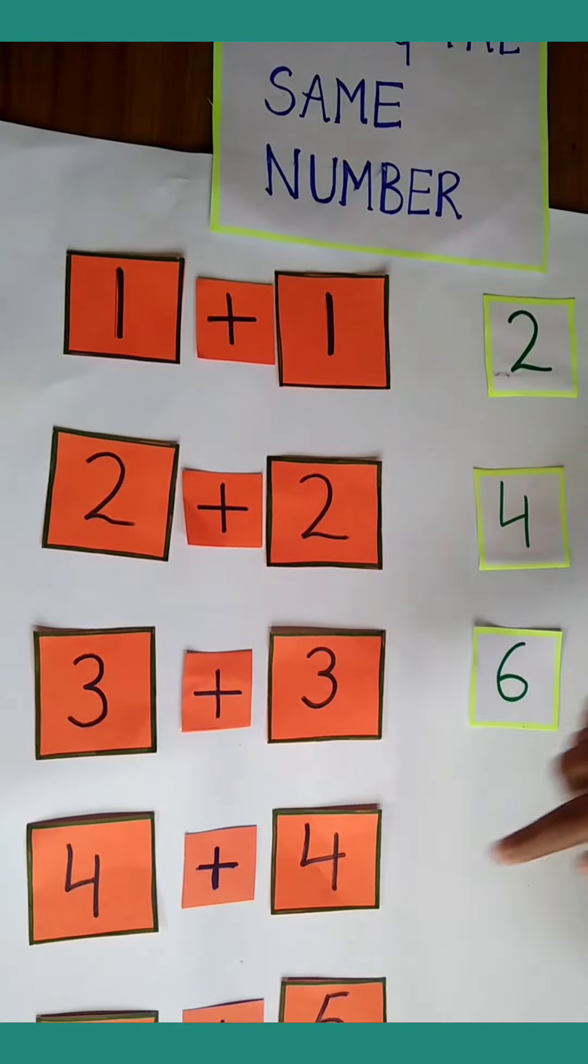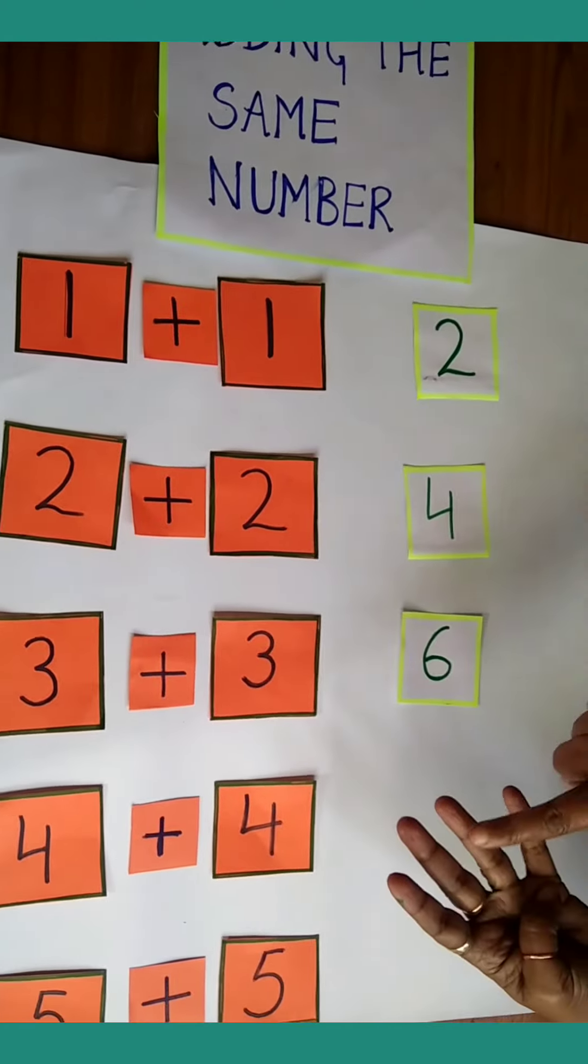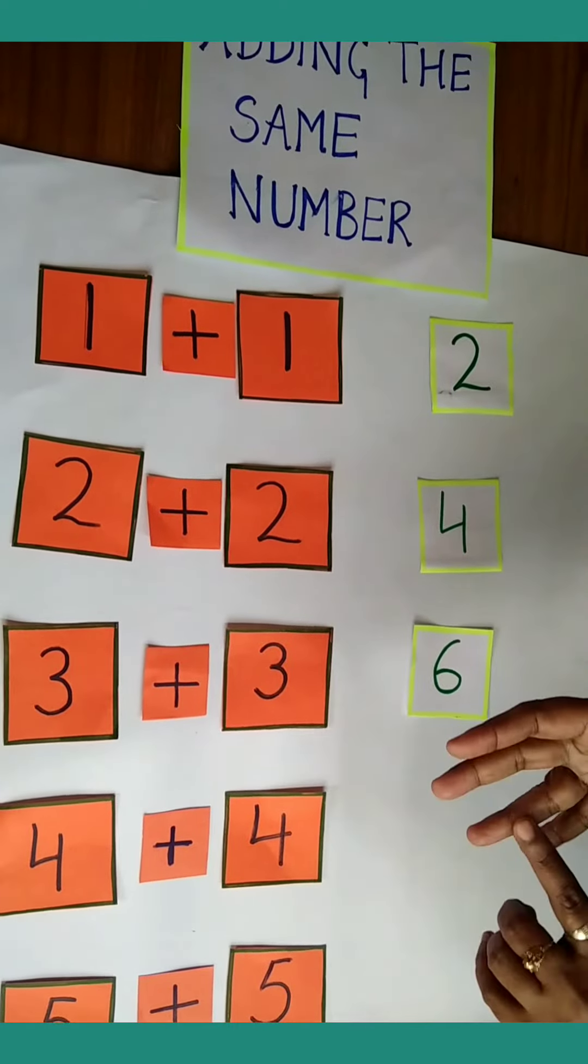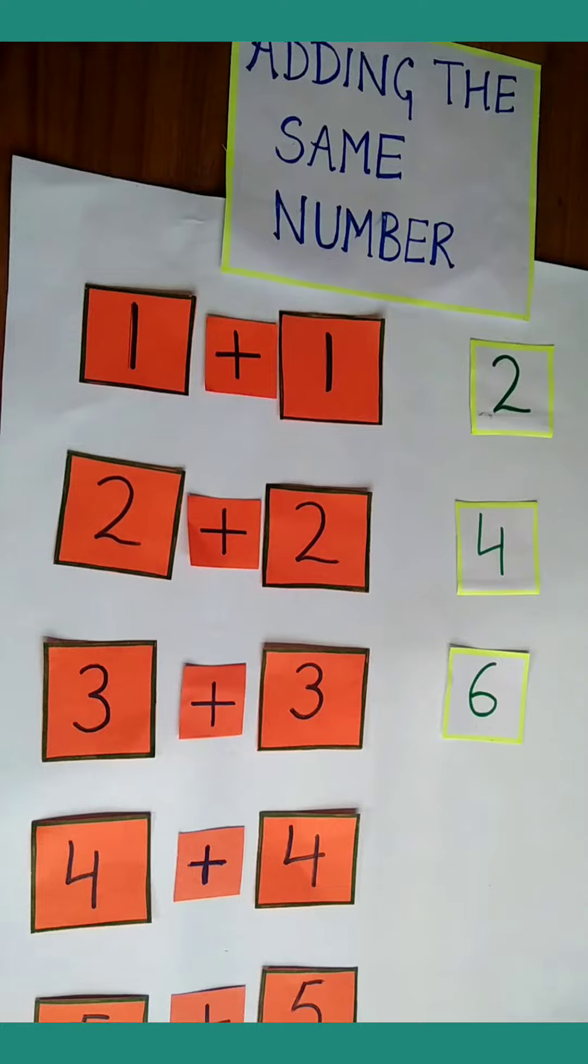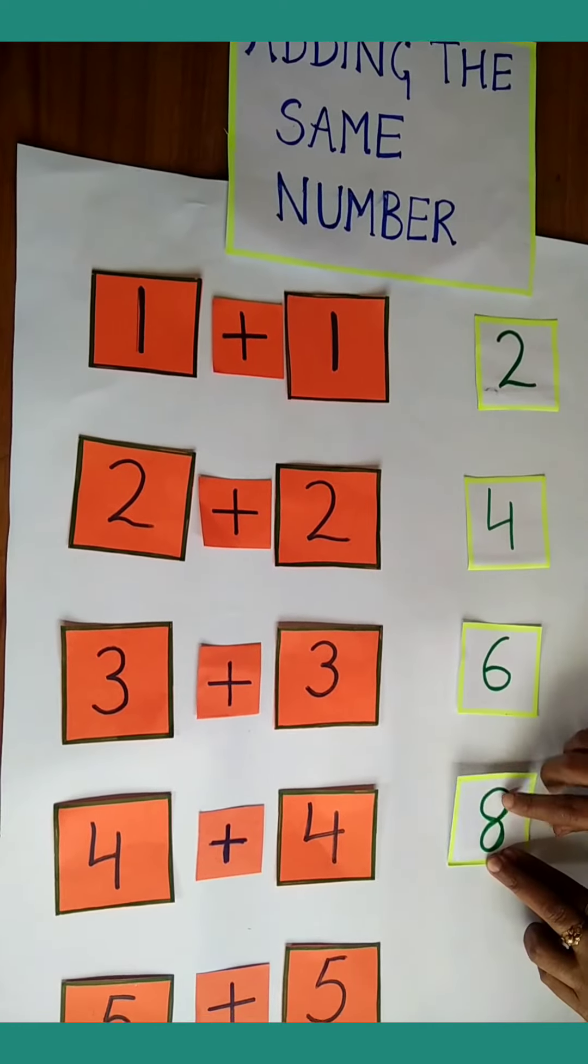4 and 4. 4 fingers: 1, 2, 3, 4. And 4 more: 1, 2, 3, 4. How many fingers? 8. The answer is number 8.